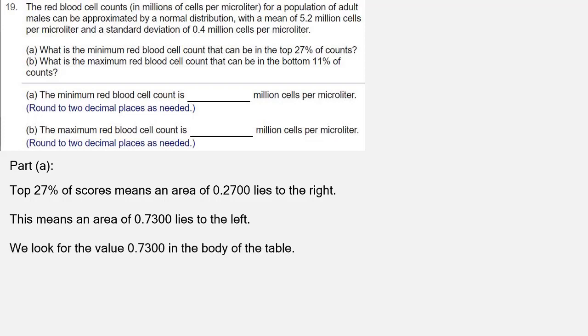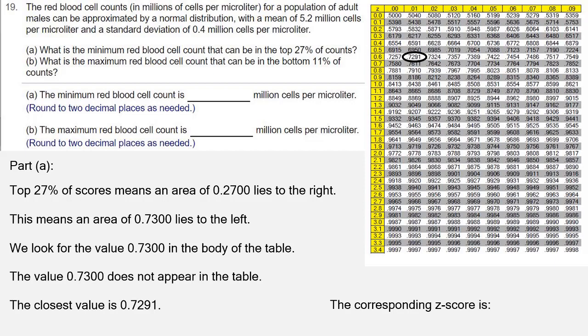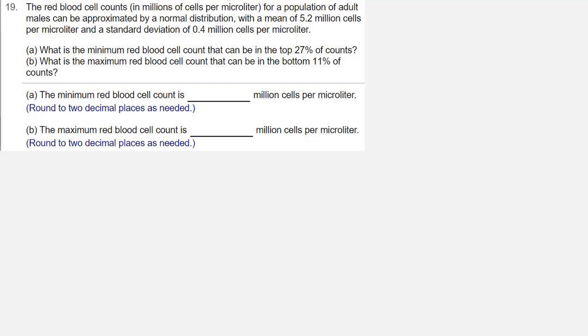We look for the value 0.7300 in the body of the table, and we don't find it there. So we look for the closest value we can find, which is 0.7291. That corresponds to a z-score value of 0.61. We don't want the z-score as our answer. We actually want the minimum red blood cell count, so we need to go a bit further.